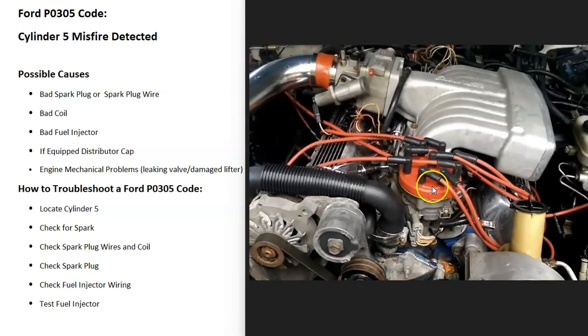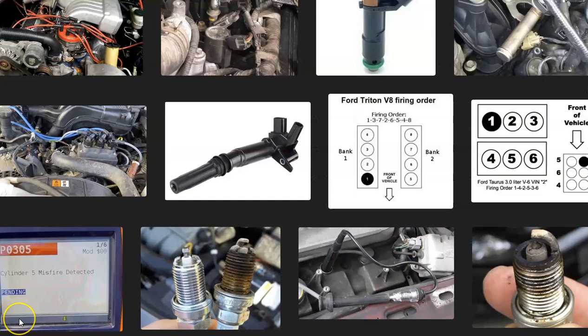If you do happen to have a distributor, be sure to examine it and check the wire going to the number five cylinder. That's basically it — just a basic overview of how you go about fixing a Ford with the P0305 code. If you have anything to add, please comment below. If you have any questions, ask and I'll try to answer them. If this video helps you, please click like, subscribe, and have a good day.